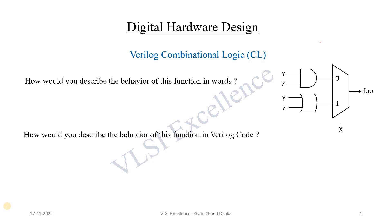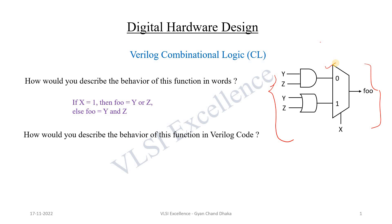So let's get started. This is our first digital circuit. Let's see how we can specify the behavior of this circuit in English. If x equals 1, then the output of the multiplexer is y OR z. Else if x equals 0, then the output of the multiplexer is y AND z.